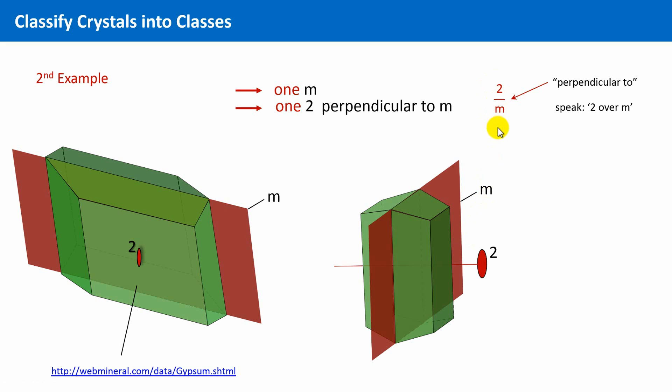If you want to save space, and if you write this symbol in a continuous text, then you can also write this in that way: 2 slash m. Okay, are there any other symmetry elements? Did we forget something?